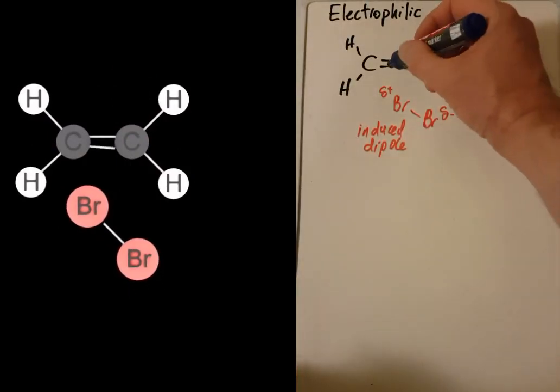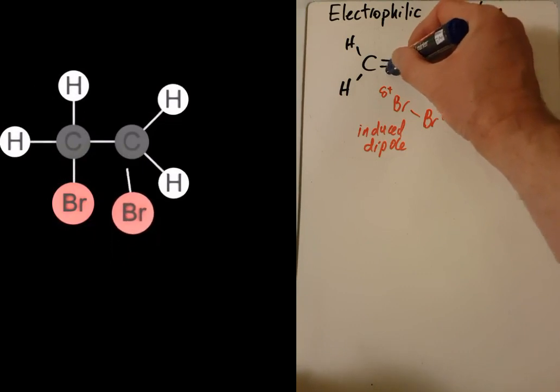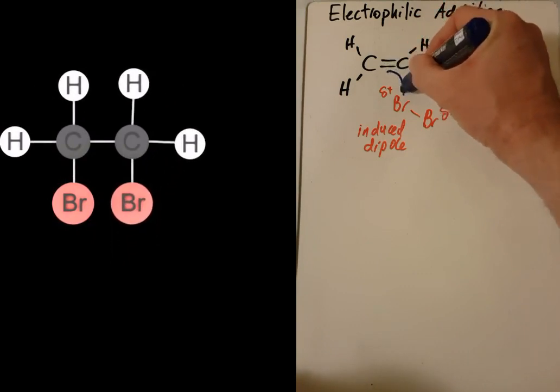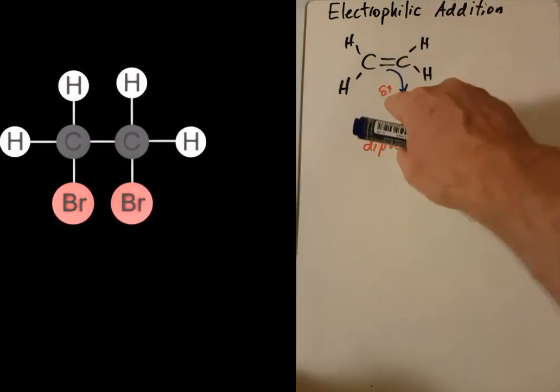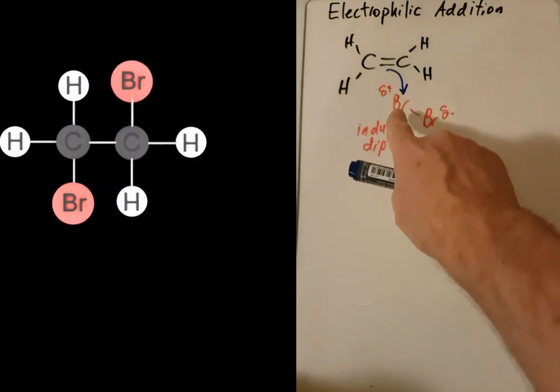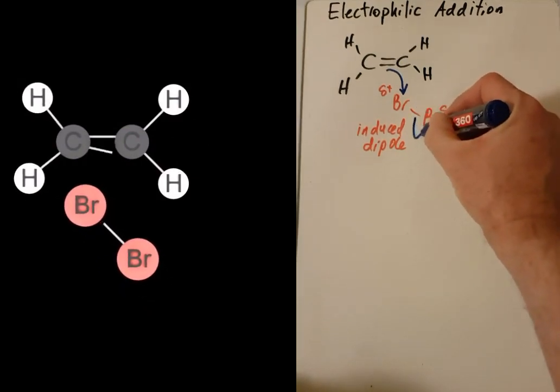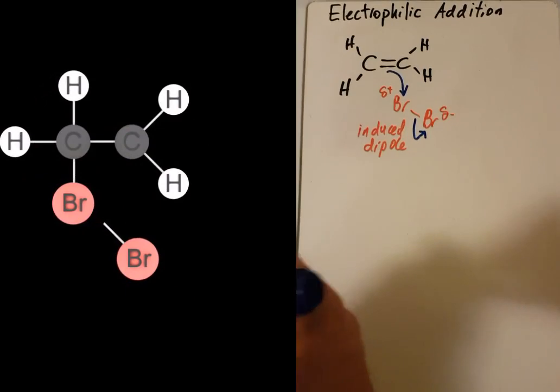So using the curly arrows method, you can see that the bond here breaks and forms a bond with the bromine there. And then this bromine-bromine bond breaks, and the electrons move over to this bromine atom.